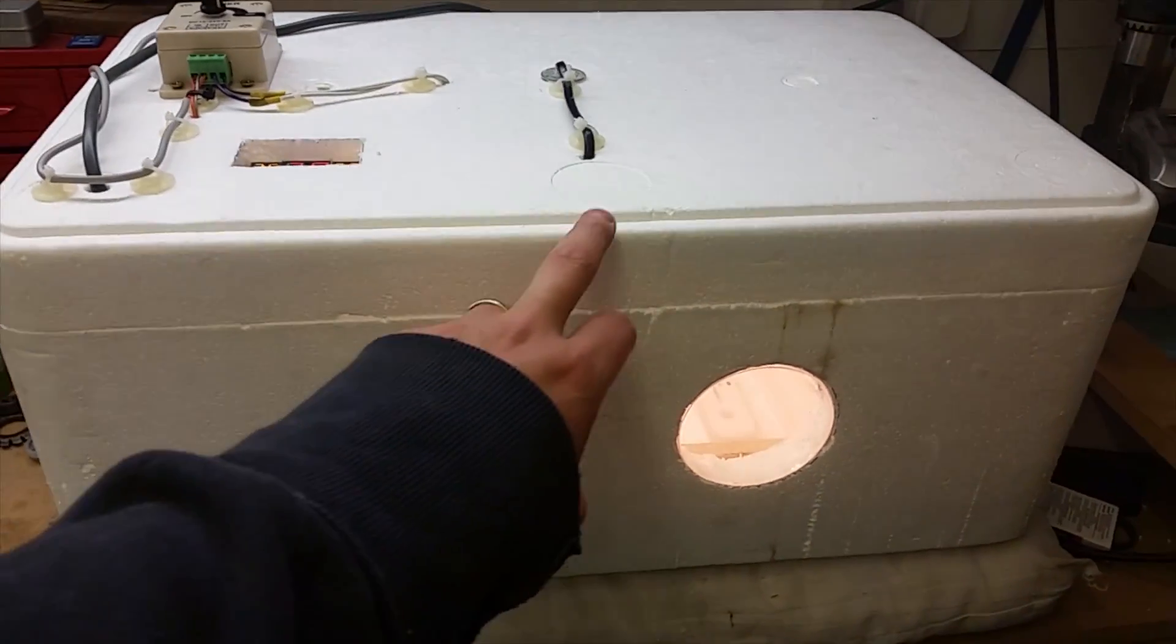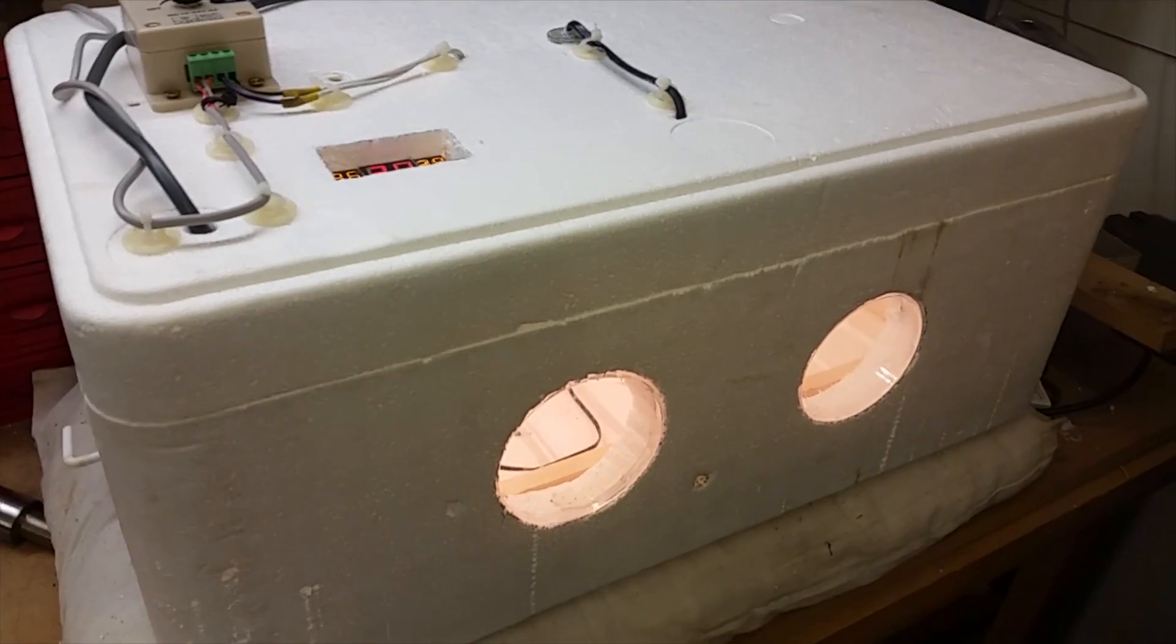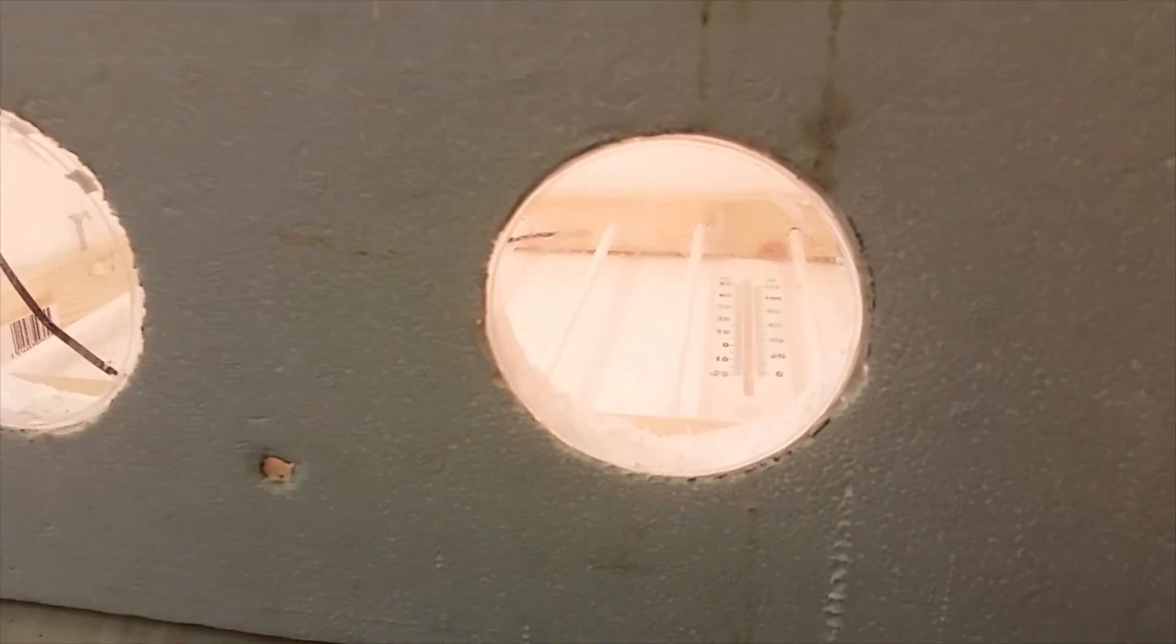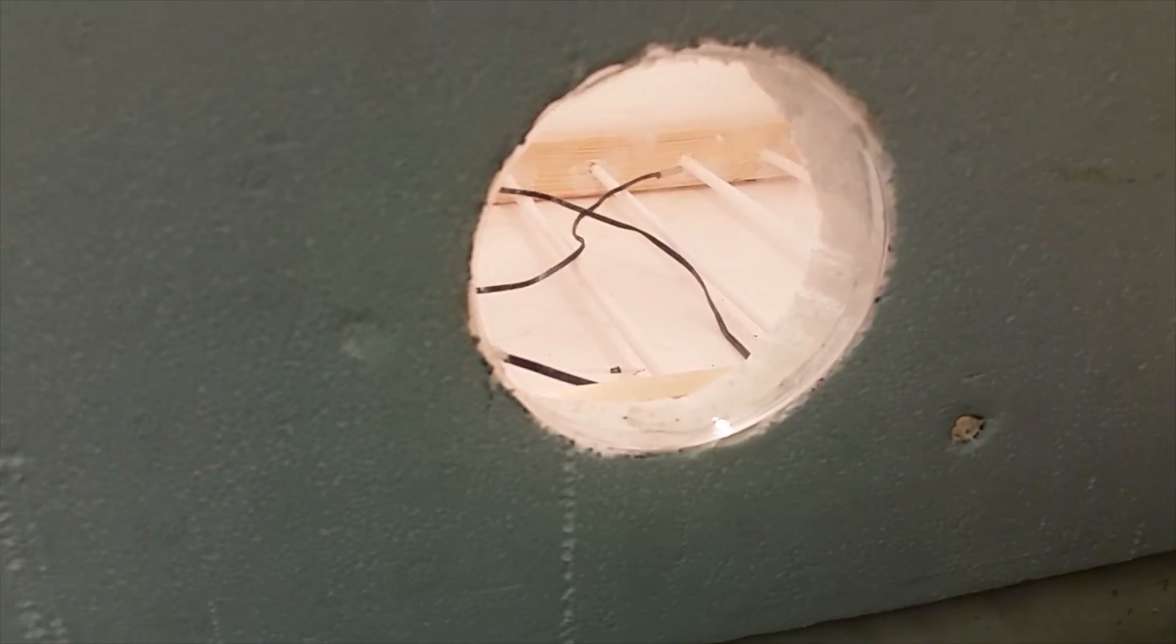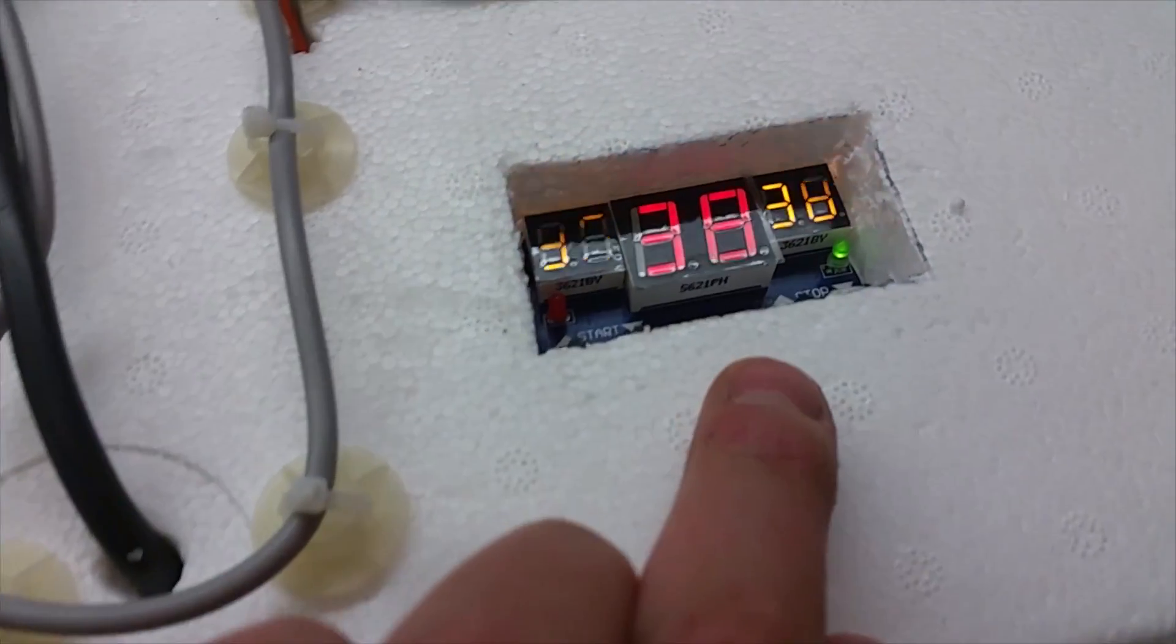So we've got a polystyrene box. It's roughly about two foot long by about a foot wide and a foot high, and there's two small peepholes that are cut into the box. And then if we come to the top, we'll see our first major component, which is this thermostatic relay.